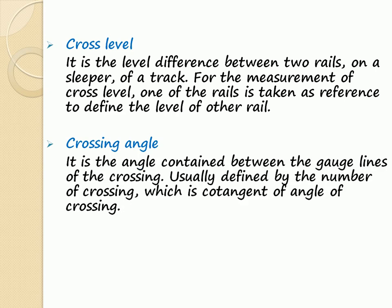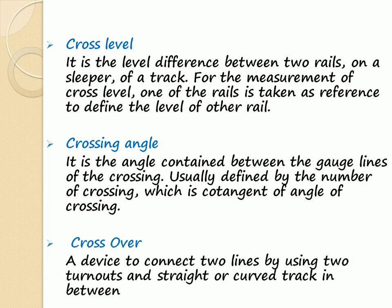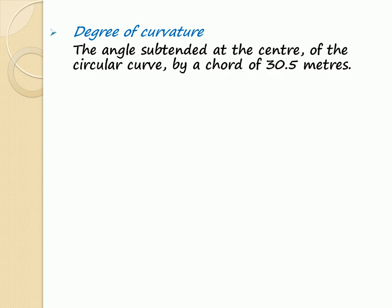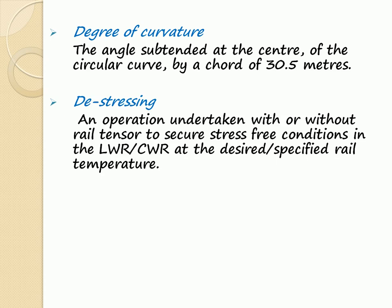Crossing Angle: It is the angle contained between the gauge lines of the crossing, usually defined by the number of crossing which is the cotangent of the angle of crossing. Crossover: A device to connect two lines by using two turnouts and a straight or curved track in between. Degree of Curvature: The angle subtended at the center of the circular curve by a chord of 30.5 meters. Destressing: An operation undertaken with or without a rail tensor to secure a stress-free condition in the LWR/CWR at the desired specified rail temperature.